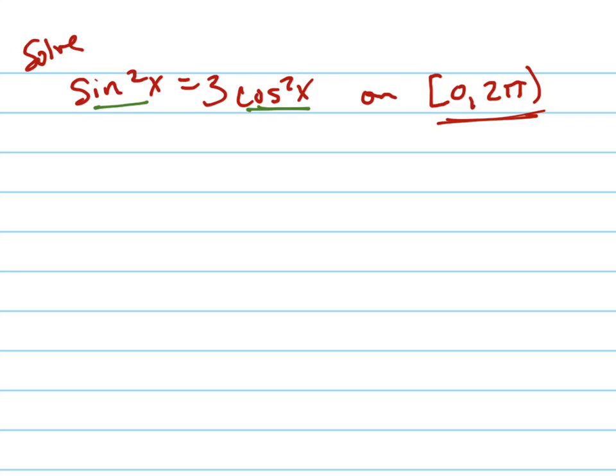Or a simpler way to do it is to turn this into cosine squared. So we're going to turn sin²x into 1 - cos²x.